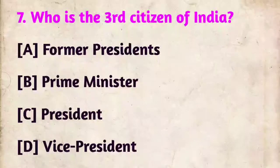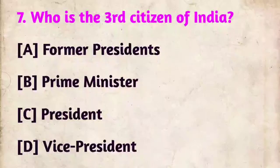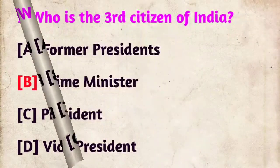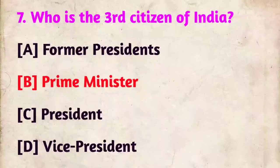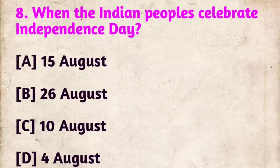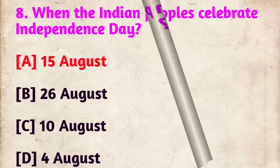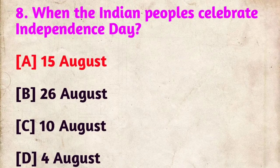Question 7: Who is the third citizen of India? The correct answer is the Prime Minister. Question 8: When do the Indian people celebrate Independence Day? The correct answer is 15th August.